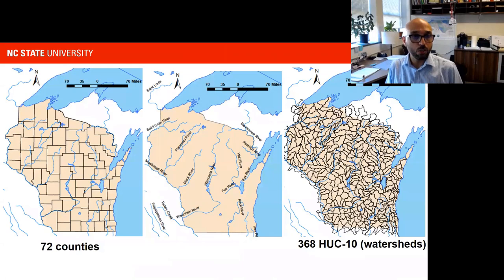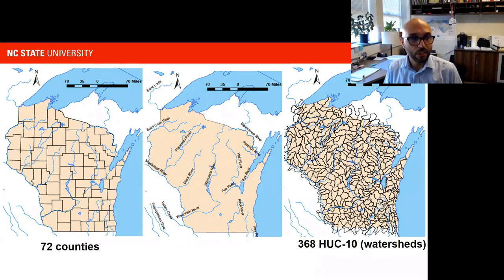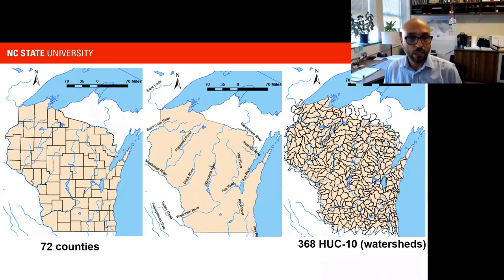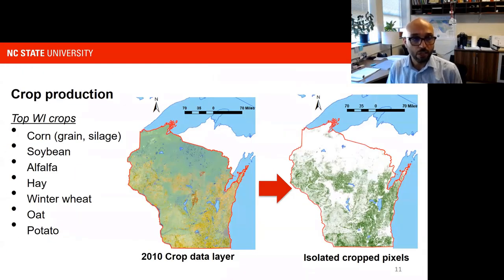In this slide I present data generated for the state of Wisconsin. On the left are administrative boundaries representing state and county lines, and on the right are the HUC-10 units representing watersheds. The difference in size and number of units can reveal a lot of trends that wouldn't be obvious using county boundaries. One of the first tools we relied on for this conversion was the Cropland Data Layer geospatial dataset.